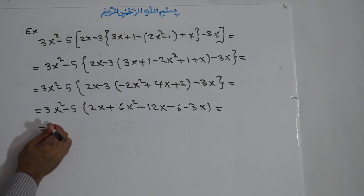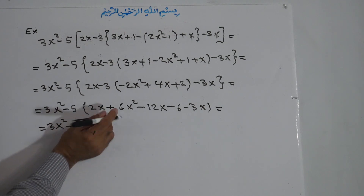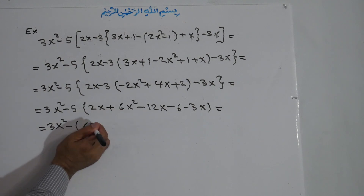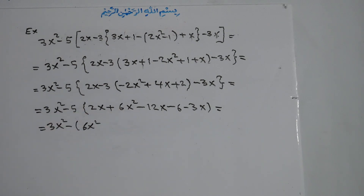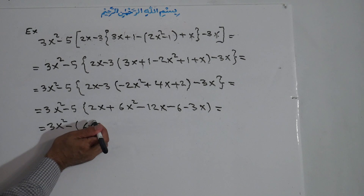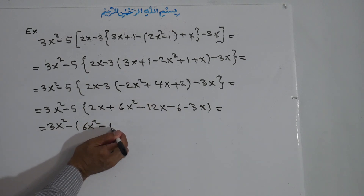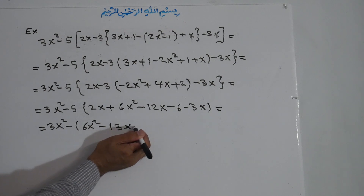Now we simplify inside this small bracket: we have 6x², then minus 12x minus 2x becomes minus 14x, and the constant minus 6. So inside the small bracket we get: 6x² minus 14x minus 6, and we still have minus 3x.